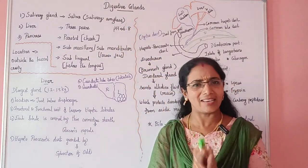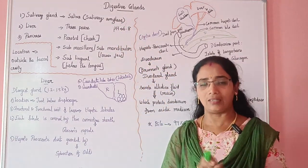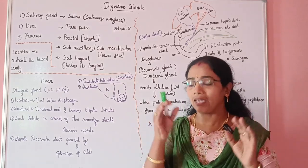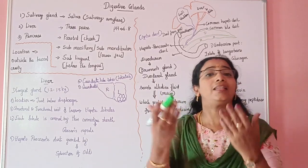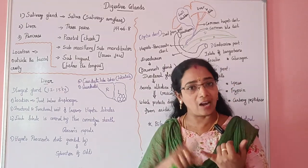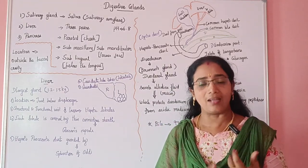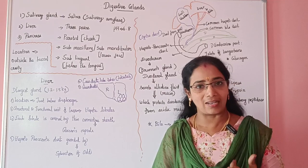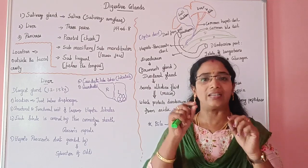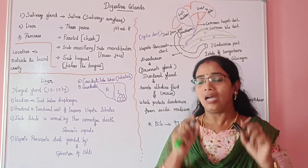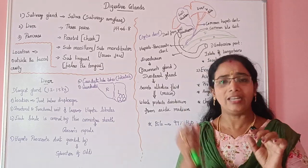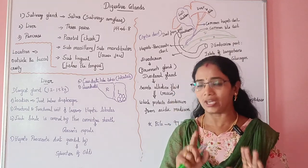First, we are going to talk about what a gland is. A gland is a type of organ that produces substances such as hormones, enzymes, milk, and saliva.